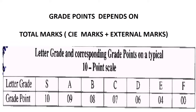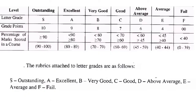The grade letters are S, A, B, C, D, E, and F. If the grade is F or E, the grade point is zero — that means the candidate has failed. Grade E has grade point 4, D has 6, C has 7, B has 8, A has 9, and S has 10. The rubrics are: S = Outstanding, A = Excellent, B = Very Good, C = Good, D = Above Average, E = Average, and F = Fail.